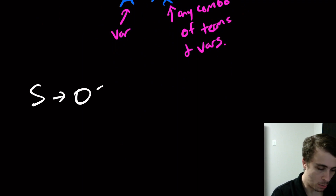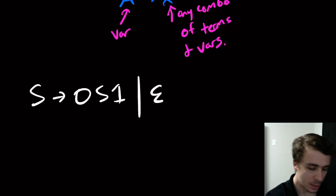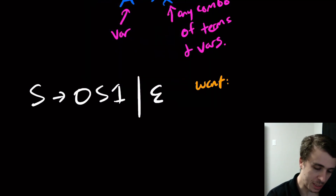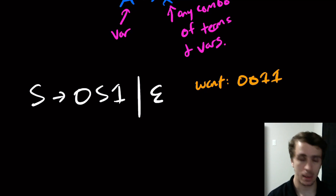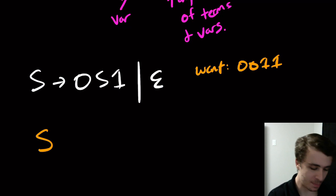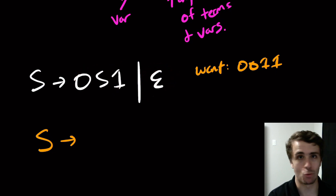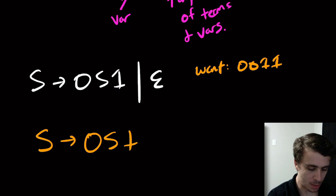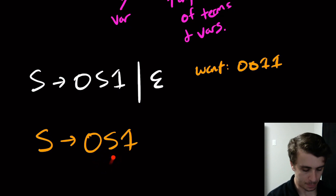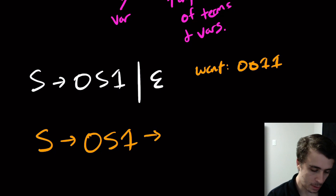Let's look at the example we talked about before: the context-free grammar for 0^n 1^n, that famous non-regular language. Say we want to make 0011. We start with S — the only variable — and apply a rule. I'm going to pick 'S → 0S1' because if I pick the other one we get stuck. The zero and the one are never going to change because anything I replace will always be one variable.